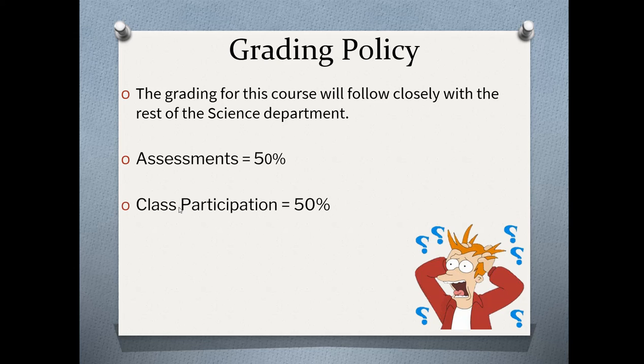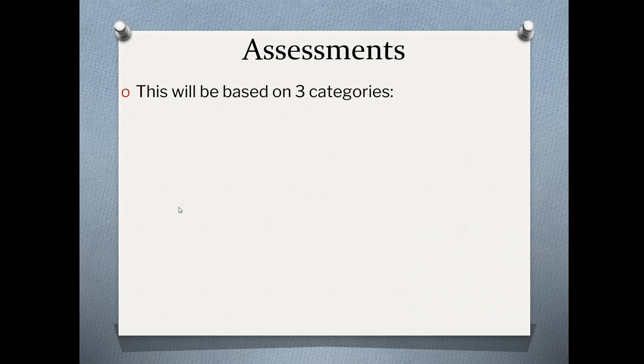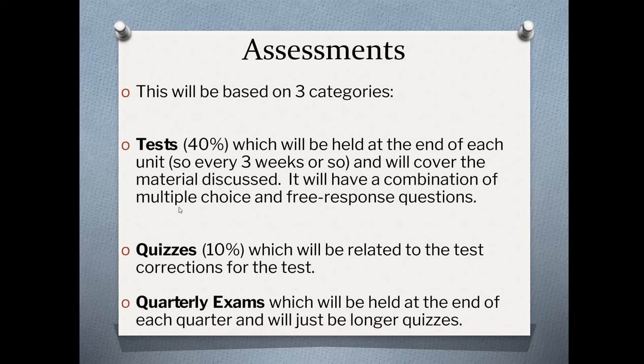For the grading policy, there are two main categories: assessments and class participation, both at 50%. Assessments include tests, quizzes, and a quarterly. Each unit will have a test, and each quarter will have about two tests and a quarterly. This allows me to drop the lowest test grade. The tests are modeled to resemble the AP exam so students know what to expect when the AP arrives.